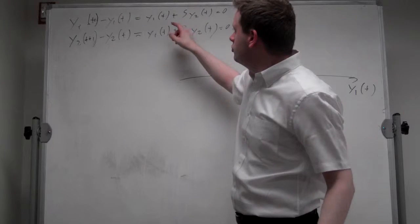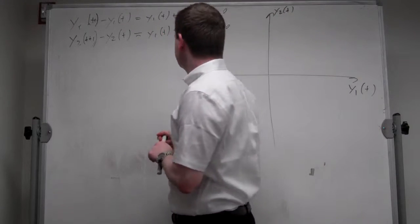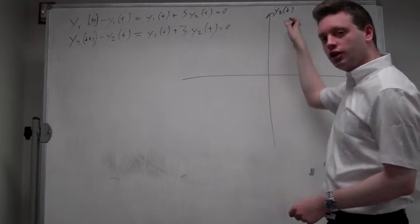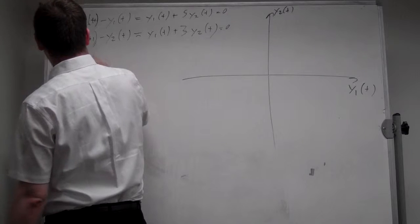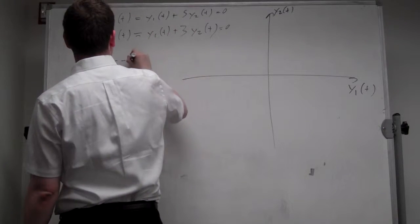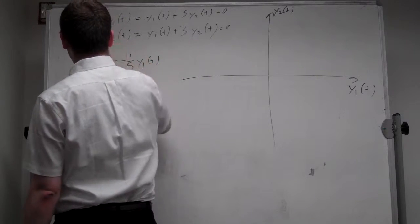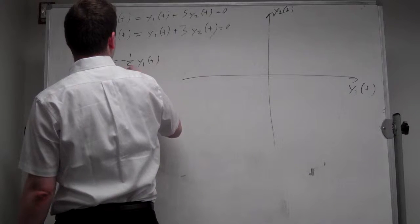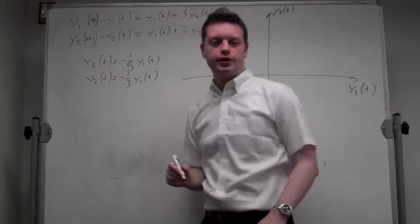Okay, to do so, we need to solve this expression for y_2, because y_2 is on the vertical axis, and we get y_2t is equal to minus 1 over 5 y_1t for the first equation, and y_2t is equal to minus 1 third y_1t for the second equation.